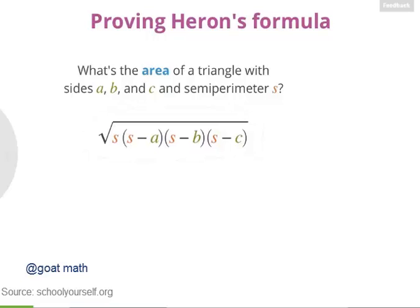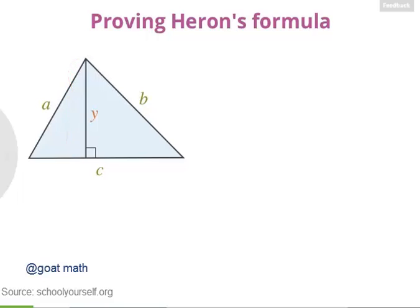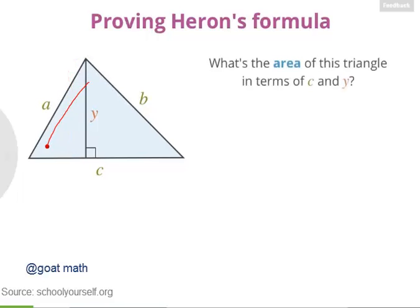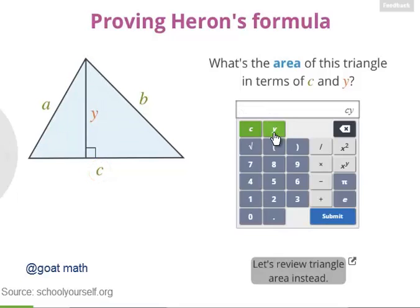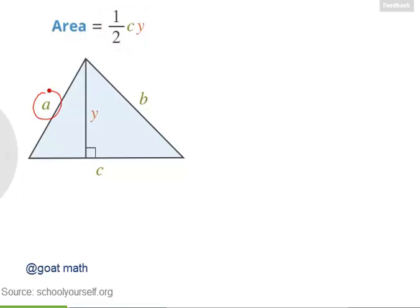Okay, let's see if we can prove this formula is correct. Suppose we have a triangle with side lengths a, b, and c, and suppose this altitude has length y. The area of a triangle is one half times its base, which is c for this triangle, times the height, which is y. But for Heron's formula, you only use the three side lengths, not the height.